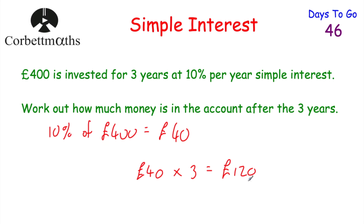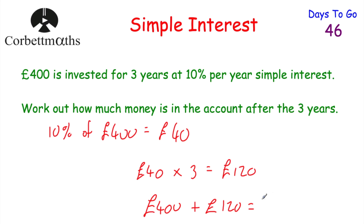So the money earns £120 interest in total. The question asks how much money is in the account after three years, so we take the initial amount of £400 and add the £120 earned in interest, which equals £520. So the answer is £520. Well done if you got that.